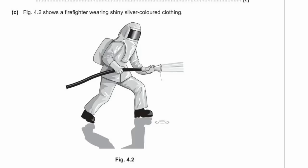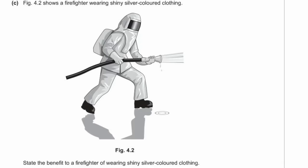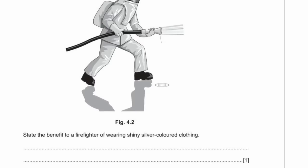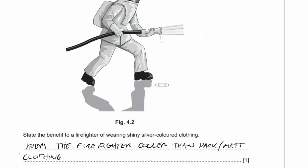Figure 4.2 shows a firefighter wearing shiny silver-coloured clothing. The benefit is that silver reflects heat better, keeping the firefighter cooler than dark matte clothing would. This makes it much safer for firefighters working near intense heat sources.